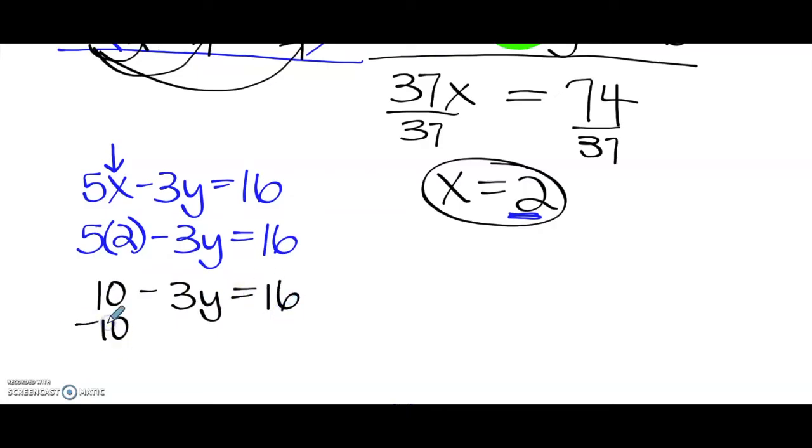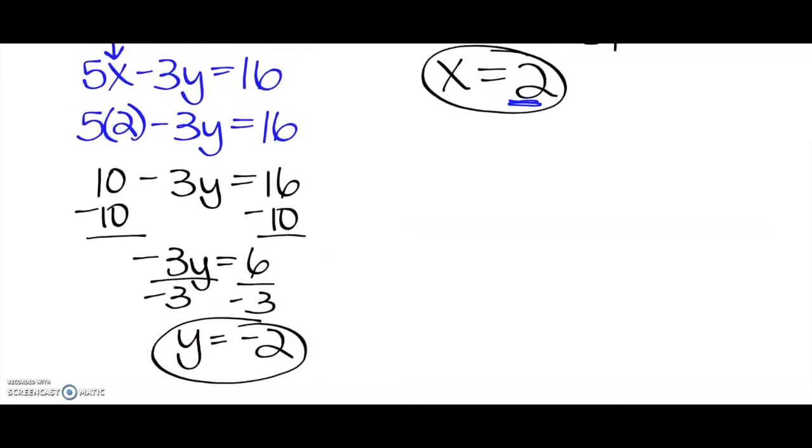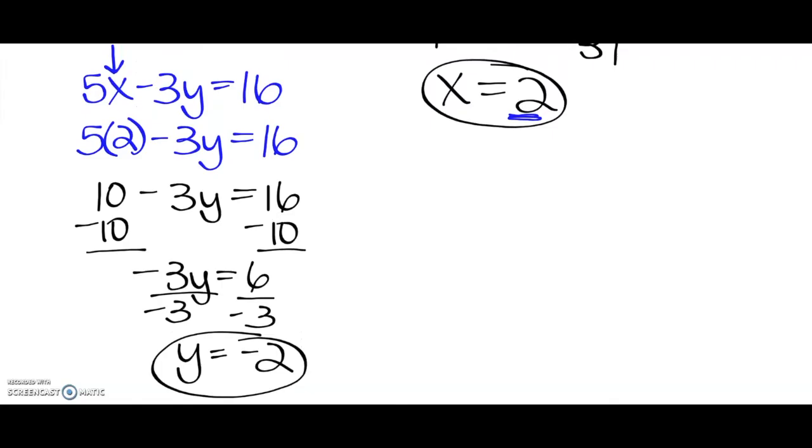Using inverse operations, I'm going to subtract 10 from both sides. I'm going to have negative 3y equals 6, because 16 minus 10 is 6. And divide both sides by negative 3. So I'm going to get y equals negative 2. So I've got an x coordinate and a y coordinate as my solution to the system. So my solution would be an ordered pair, which is (2, -2).